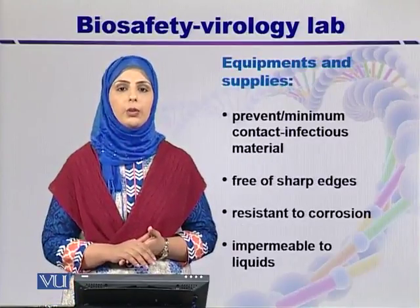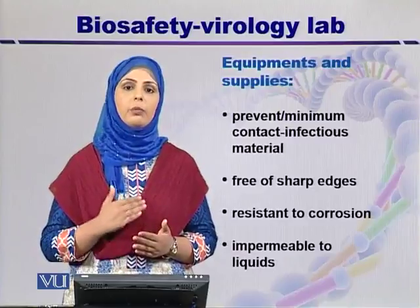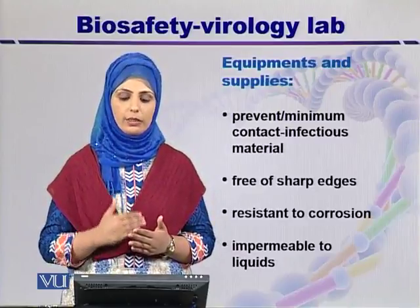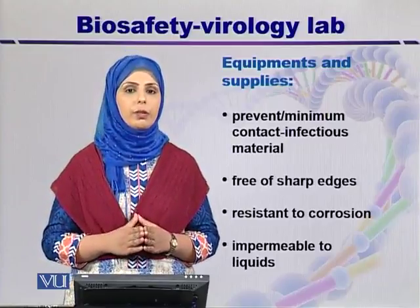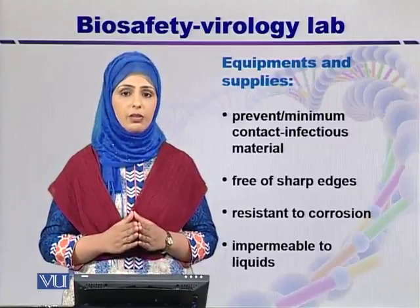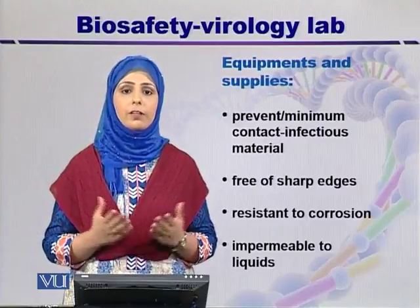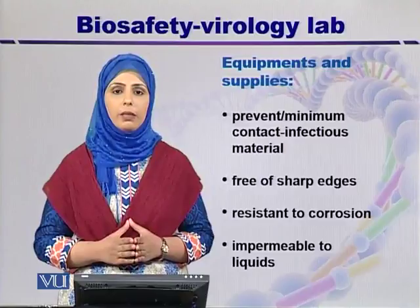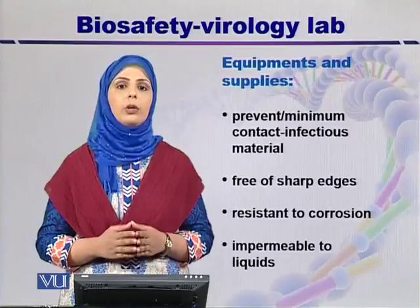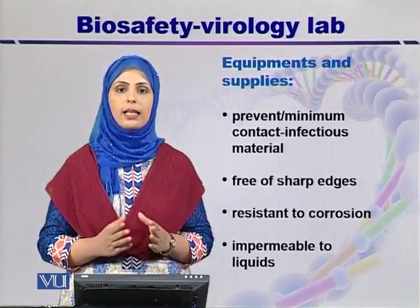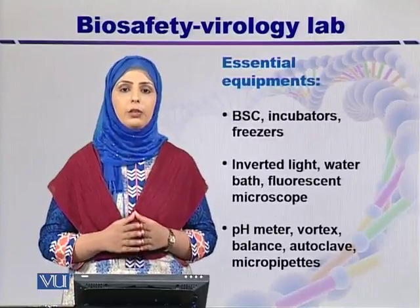The third element is equipment and supplies. Equipment must minimize contact between personnel and infectious material, be free of sharp edges, and be resistant to corrosion. If breakage occurs, decontaminate first. Equipment parts should be impermeable to liquids and chemicals. Equipment is divided into two groups: essential and desirable.